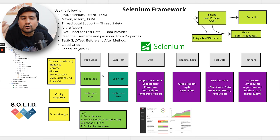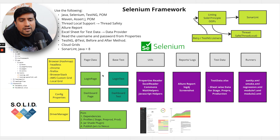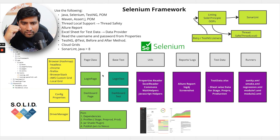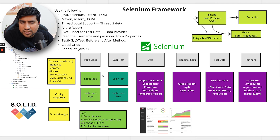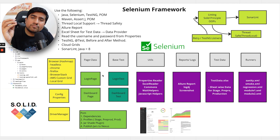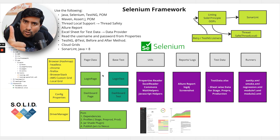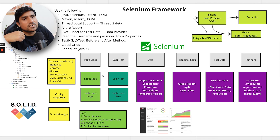We have a Base Test followed by utils. We have a Property Manager, Excel Manager, common wait handlers, JavaScript executor handlers, and reporting. We are using Allure Report and for logging we are using log4j updated version. Screenshots are captured using TestNG listeners. For test data, we prefer to use a test data Excel file. We are using either Fillo Manager or Apache POI — whichever you are comfortable with.